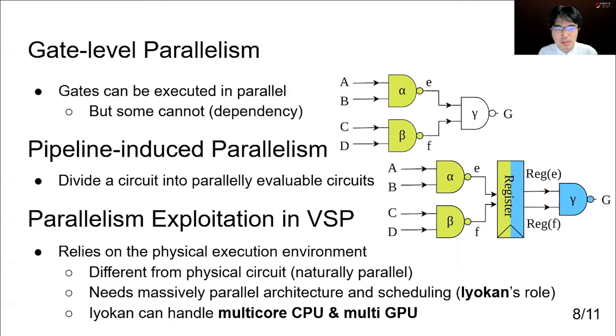Iyokan takes care of this scheduling problem. The prominent feature of Iyokan is it supports both multi-core CPU and multi-GPU to maximize usable physical machine capability.